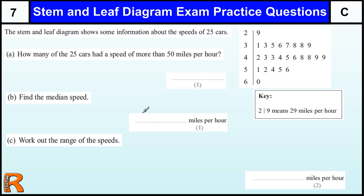Last question. Again, diagram is drawn for us already. How many of the 25 cars had a speed of more than 50 miles per hour? Well, the key tells us 2 slash 9 is 29. So 50 would be 5 slash 0. So 5 slash 1 is 51, 52, 54, 55, 56. So 1, 2, 3, 4, 5, 6 values bigger than 50.